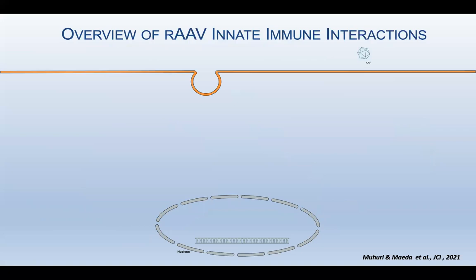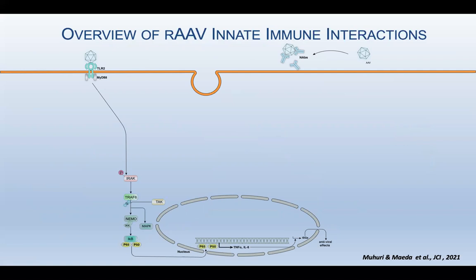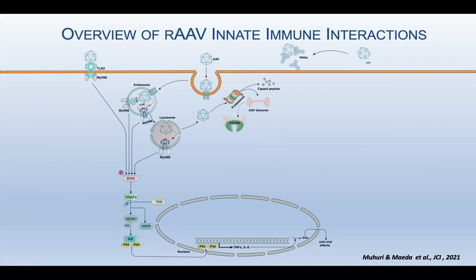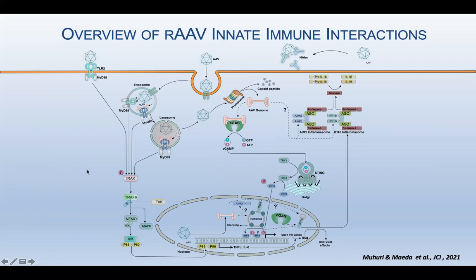I would like to give an overview of AAV innate immune interactions. When AAV enters the body, it first encounters pre-existing neutralizing antibody and then engages with TLR2 receptor on the antigen-presenting cell surface, triggering capsid sensing. Second, it could internalize into the endosome, engage with TLR9 and MyD88, and trigger DNA sensing involving the cGAS-STING pathway, as well as the MAVS pathway. Finally, AAV could potentially trigger double-strand and single-strand RNA sensing.